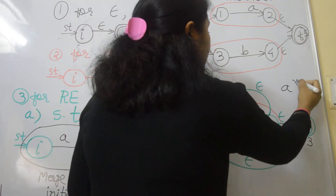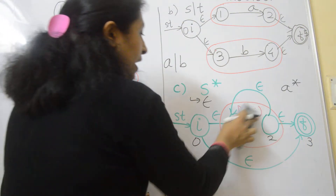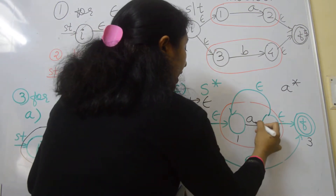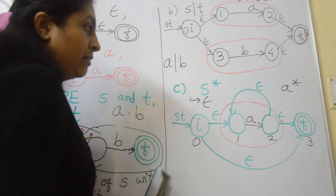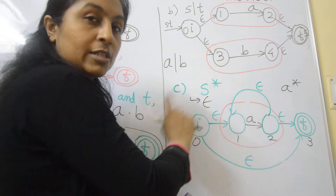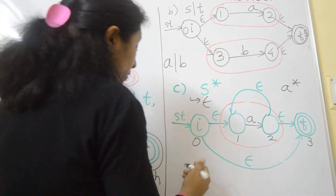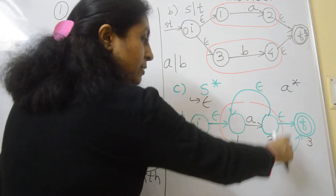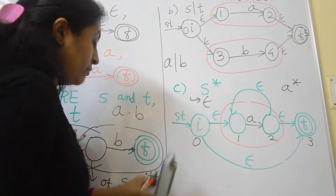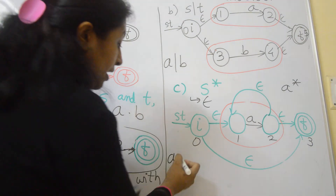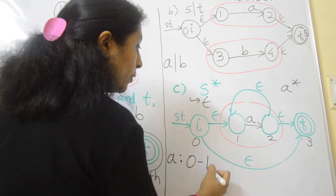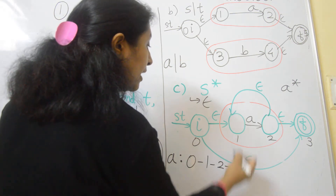For example, for A*, construct the NFA for Kleene closure of A. For a null string, go from state 0 to state 3. To check validity of A, the states visited will be state 0, 1, 2, and then 3.